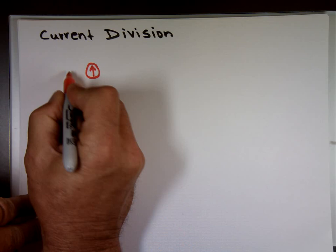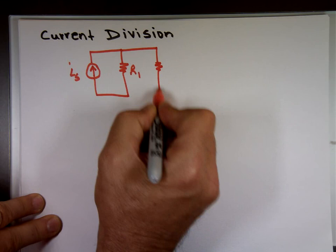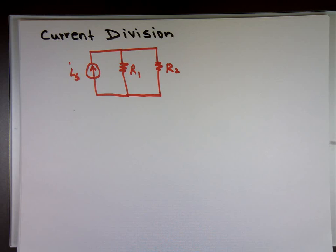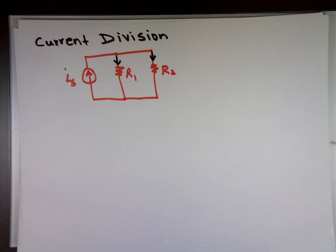So I have like a current source like this one we'll call it I sub S. That's the source and it's connected. Let's do two resistors for now. R1 and R2. And if the current going in, I'm assuming here just common sense, I'm assuming when you get to this R sub 1, R sub 2, they're going to split coming down.